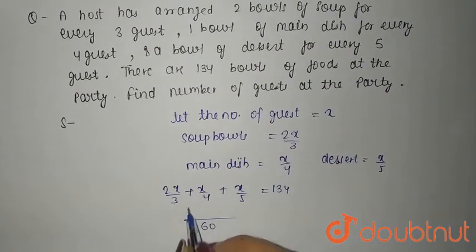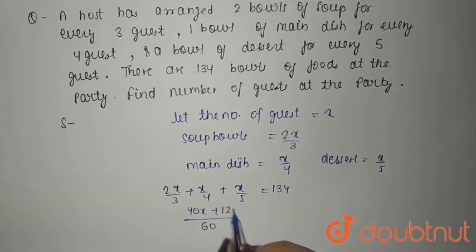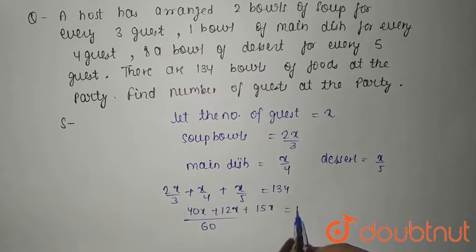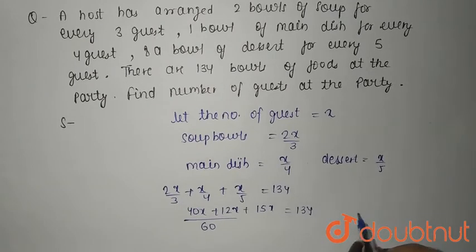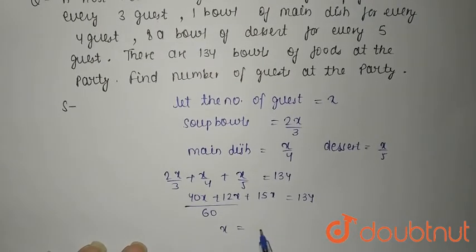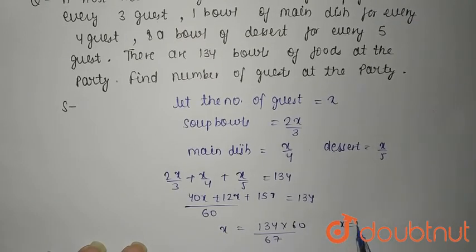Taking LCM, you will have 40x plus 12x plus 15x equals to 134 times 60. So from here you will have x equals to 134 times 60 divided by 67.